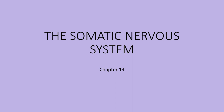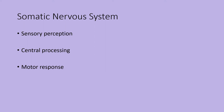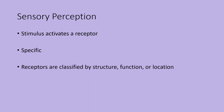Chapter 14 deals with the somatic nervous system. We're going to break it down into three components: sensory perception, the central processing of that sensory information, and then the mode of response to it.